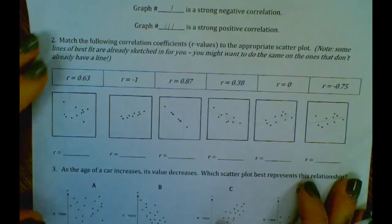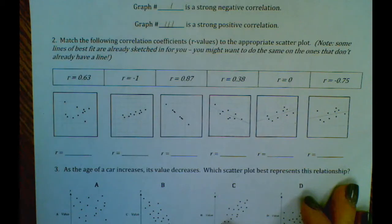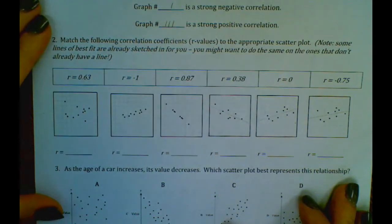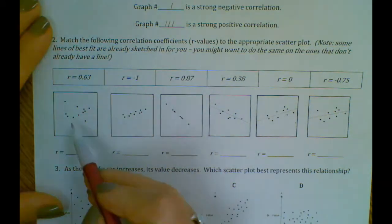So number two here, it says match the following correlation coefficients or r-values to the appropriate scatterplot. It says some of the lines of best fit are sketched, you may want to do the same on the ones that don't have this. So if you want to go ahead and draw the line of best fit, we can, doesn't need to be perfect.